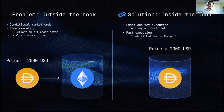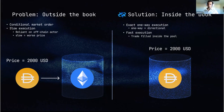This results in slow execution. You're reliant on an off-chain actor, which can lead to worse price. With BullShark's solution, we have one-way execution — that's why we refer to it as directional LP. This is faster because the trade is filled inside the pool along with all the other trades.